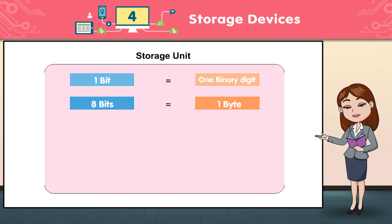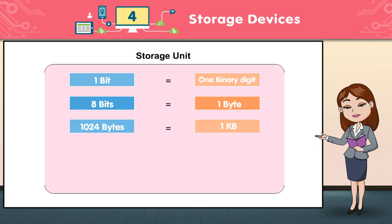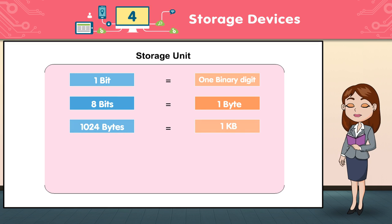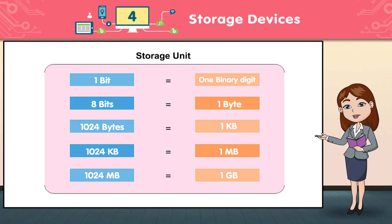Storage Unit. 1 bit is equal to 1 binary digit. 8 bits is equal to 1 byte. 1024 bytes is equal to 1 KB. 1024 KB is equal to 1 MB. 1024 MB is equal to 1 GB.